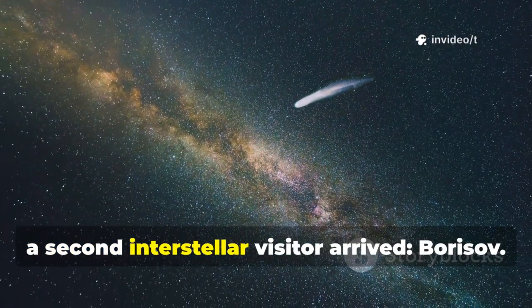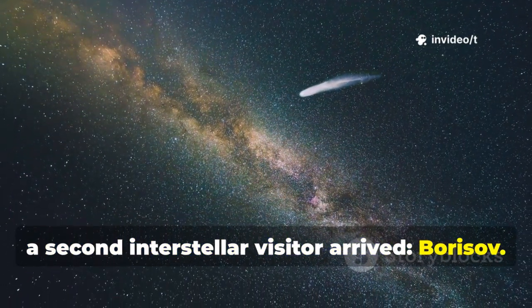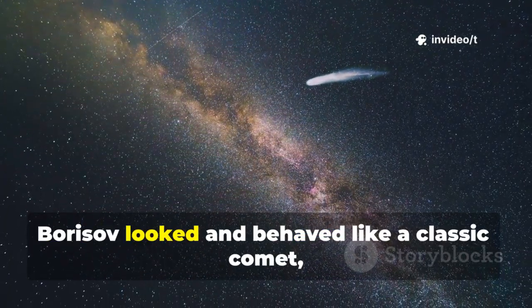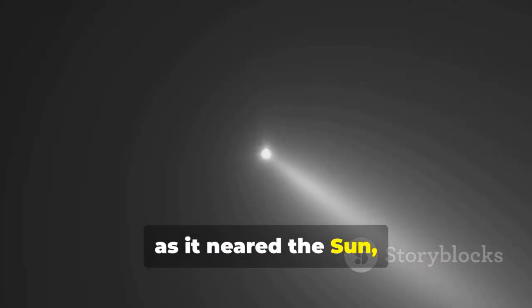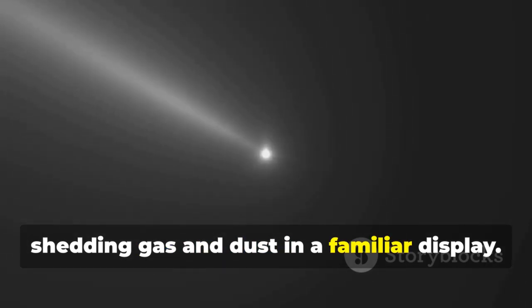Then in 2019, a second interstellar visitor arrived, Borisov. Unlike Oumuamua, Borisov looked and behaved like a classic comet, developing a bright coma and a long tail as it neared the sun, shedding gas and dust in a familiar display.